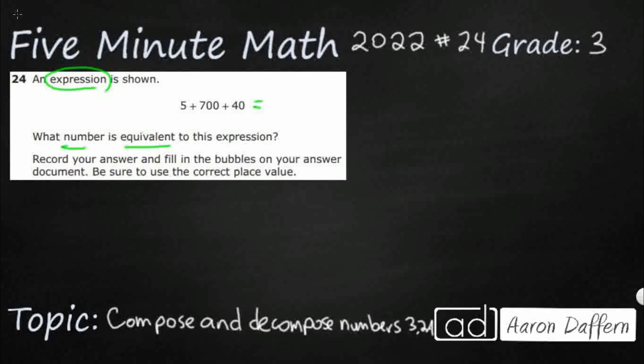First, let's figure out what we're dealing with. 5 plus 700 plus 40. It looks a little bit like expanded form, except they just didn't put it in the right order.